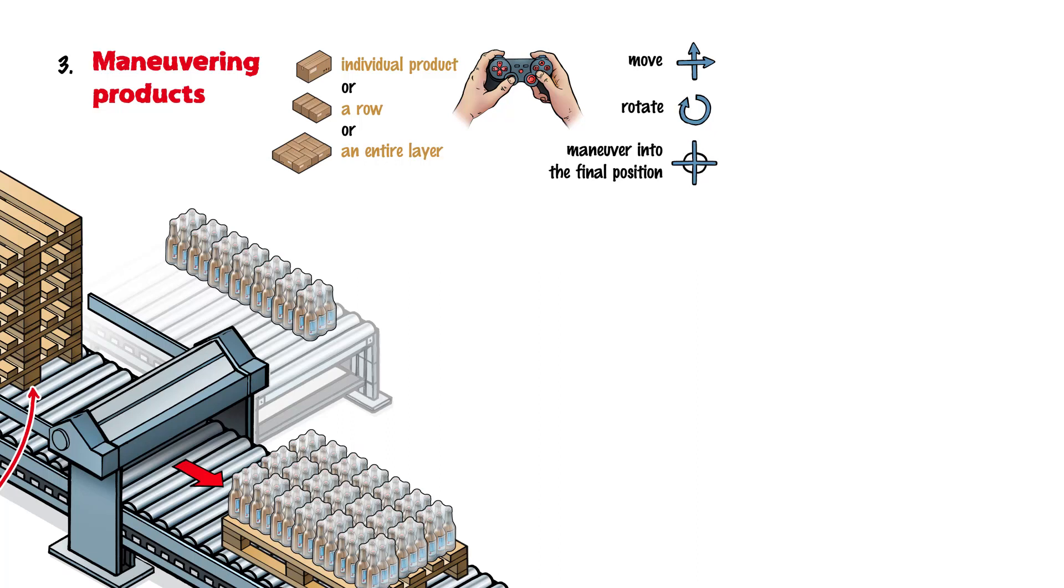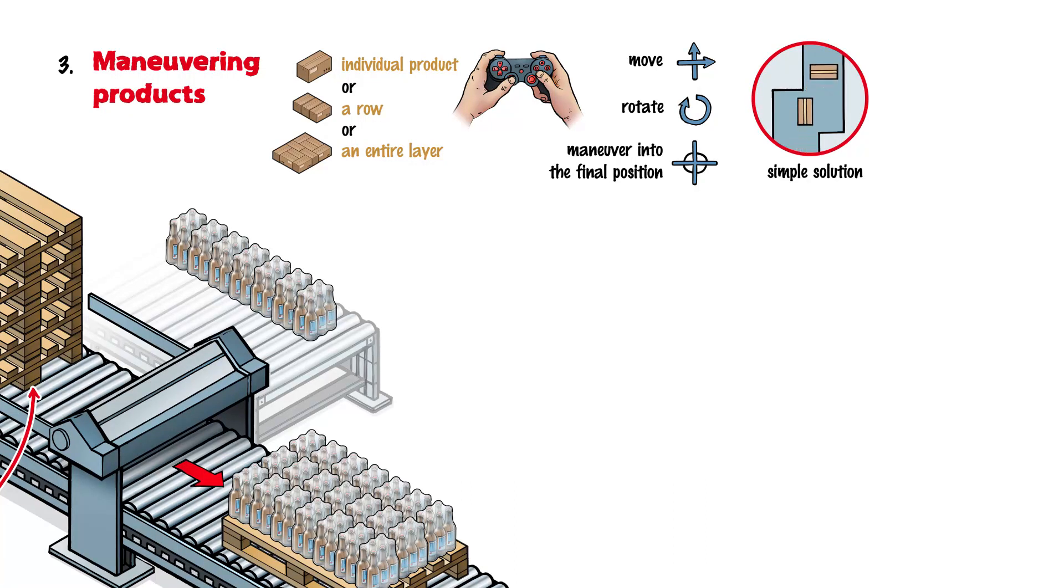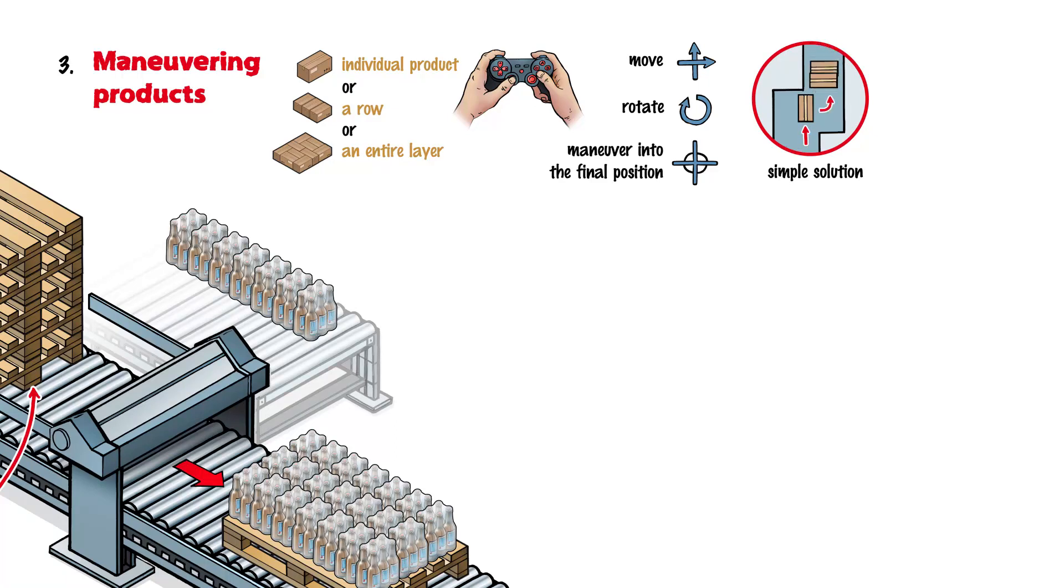How this is done depends, for example, on the variety of products and the speed. Simple solutions use mechanical stops and pivoting points. For this kind of system to work, the product flow and product must always stay the same, and the resulting layer pattern cannot be modified.